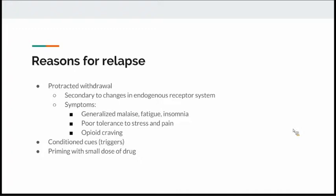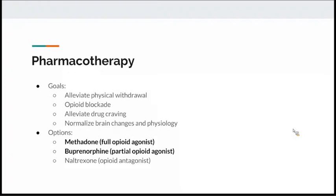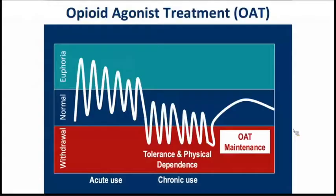Reasons for relapse include a protracted withdrawal syndrome with fatigue, insomnia, poor tolerance to stress and pain, strong cravings, conditioned cues and triggers, and priming with small doses. The goal of treatment is pharmacotherapy. The options I'll focus on are buprenorphine and, briefly, methadone. The goals of pharmacotherapy are to alleviate physical withdrawal, block opioid receptors, and alleviate cravings.